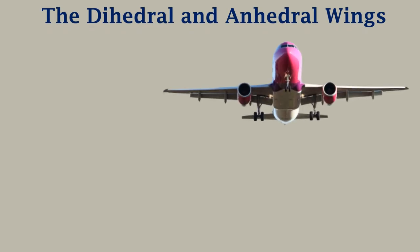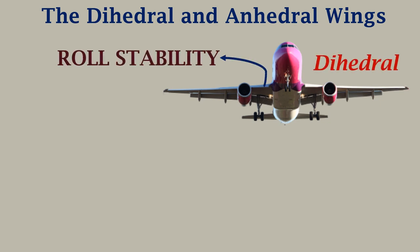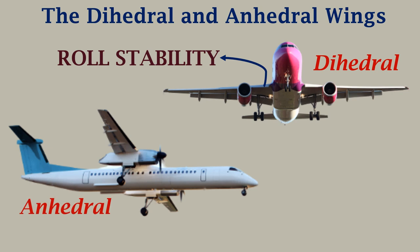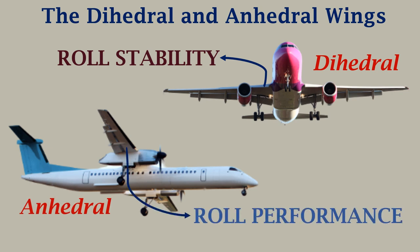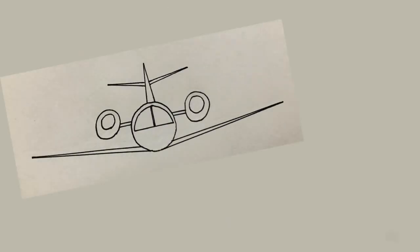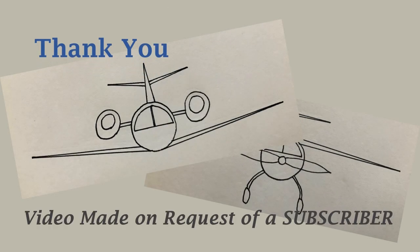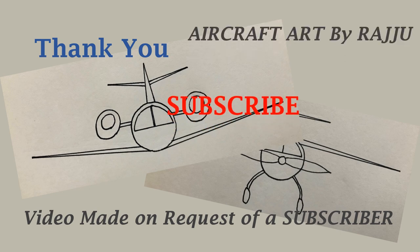So to summarize, dihedral wings are widely found in low wing aircraft in order to improve the roll stability, and anhedral wings are found in high wing aircraft to improve the roll performance. If you liked the video, do subscribe for more videos. Thank you!